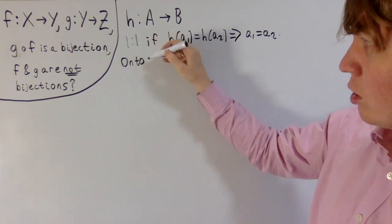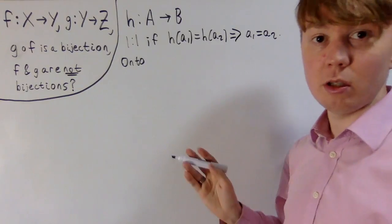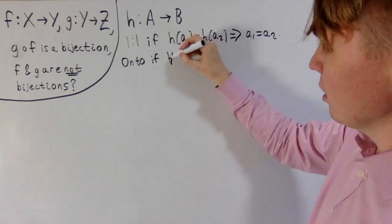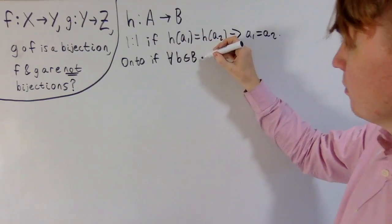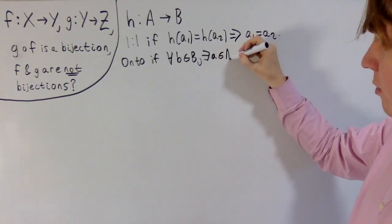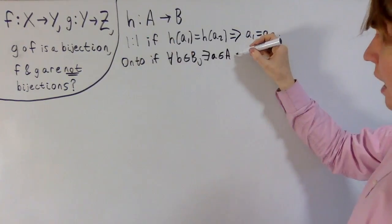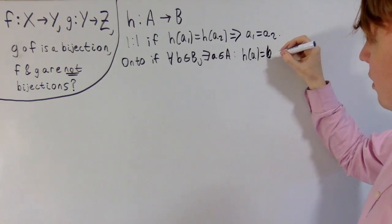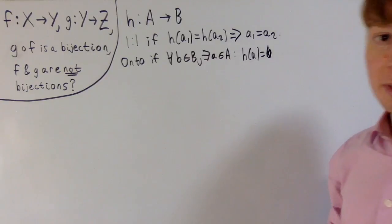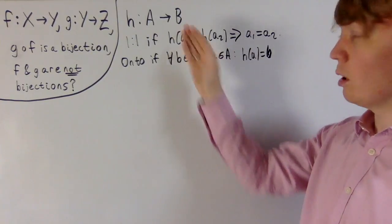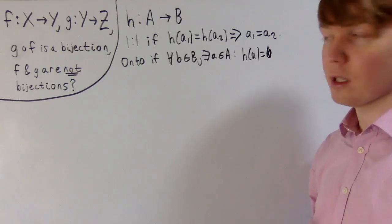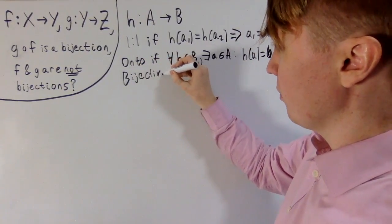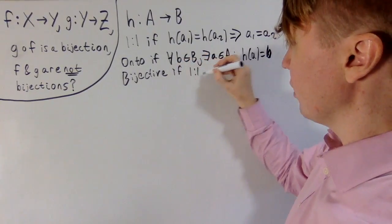And then we need another definition, which is that h is onto, or surjective. This just means that for every element b in the set B, there exists some element a in the domain A such that h of a equals b. So you can always find an element a which maps to an element b in B — you can always fill up your codomain. And then you have a bijection: h is bijective if it's one-to-one and it's onto.